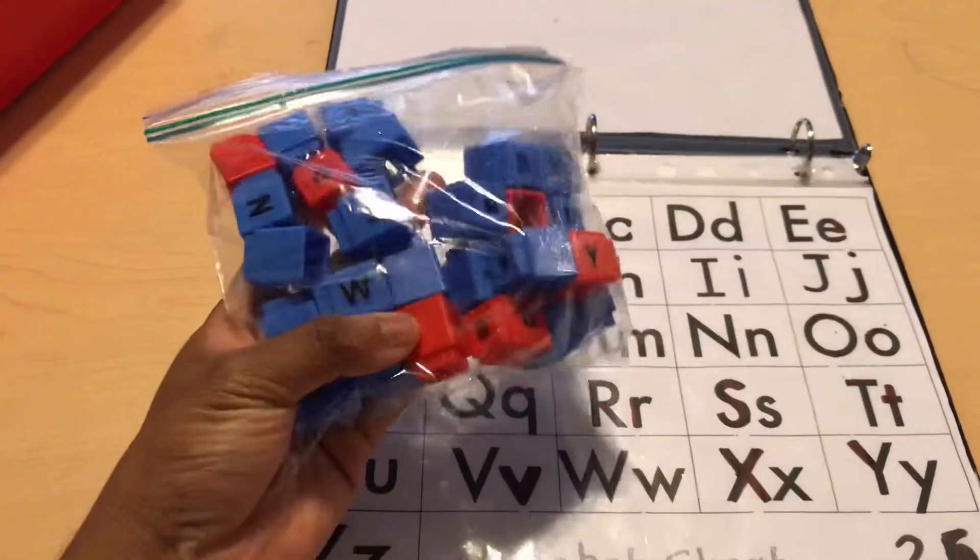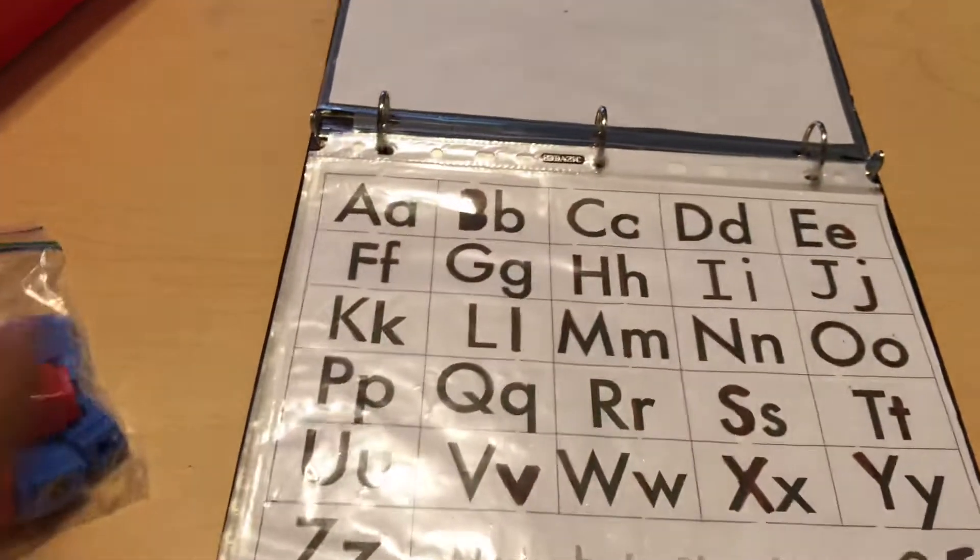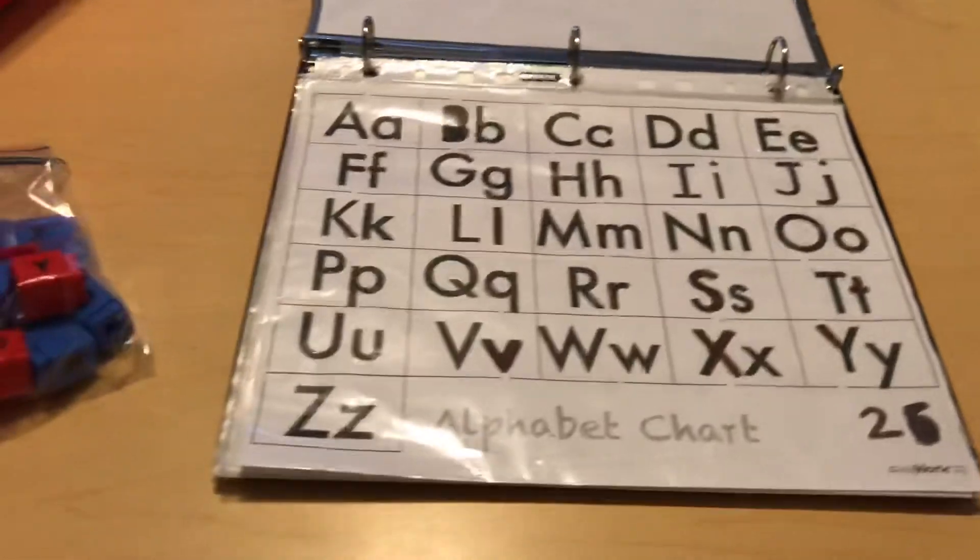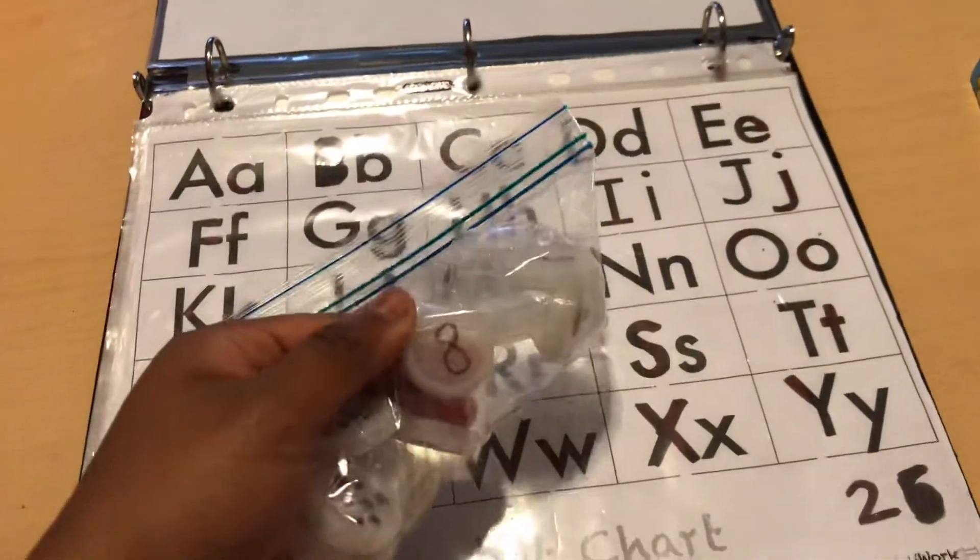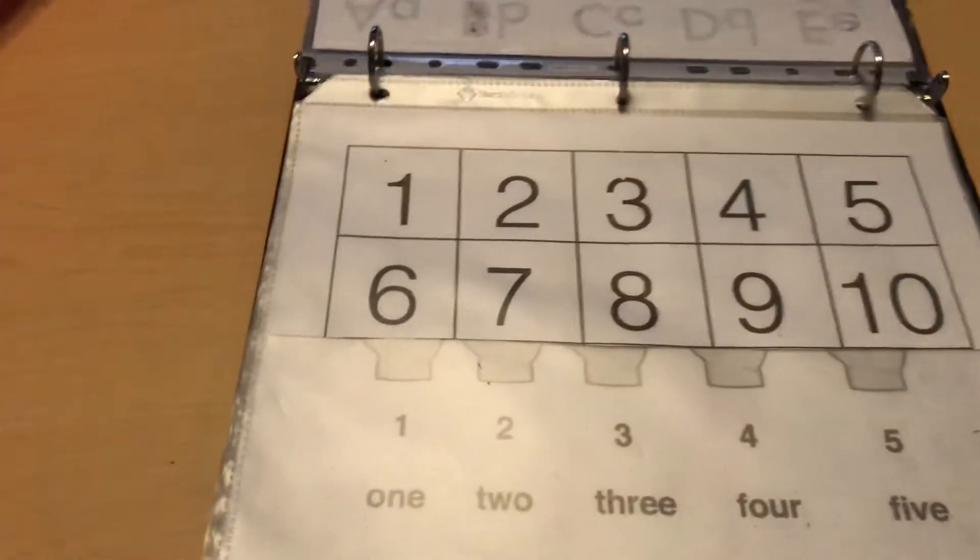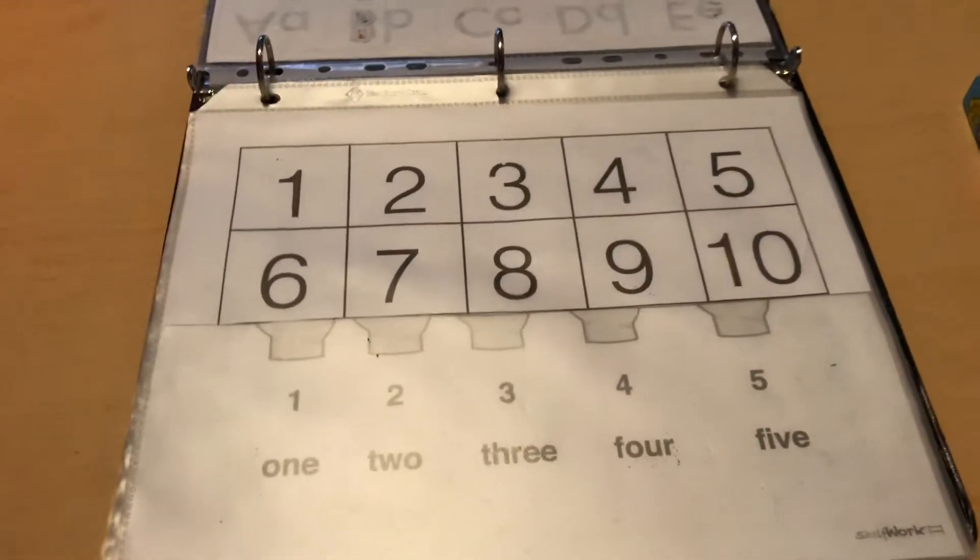For her ABC activity, I give her this and she has all the letters. Because we're working on uppercase letters, this has uppercase and lowercase. What I do is I just give her one at a time and she has to find the letters that match the cubes. Same thing with numbers, but the only difference is that I made these with bottle caps and it has the numbers on them all the way through ten, and she just places them on it. I have another activity with little dots, but it's a little bit more advanced for her.